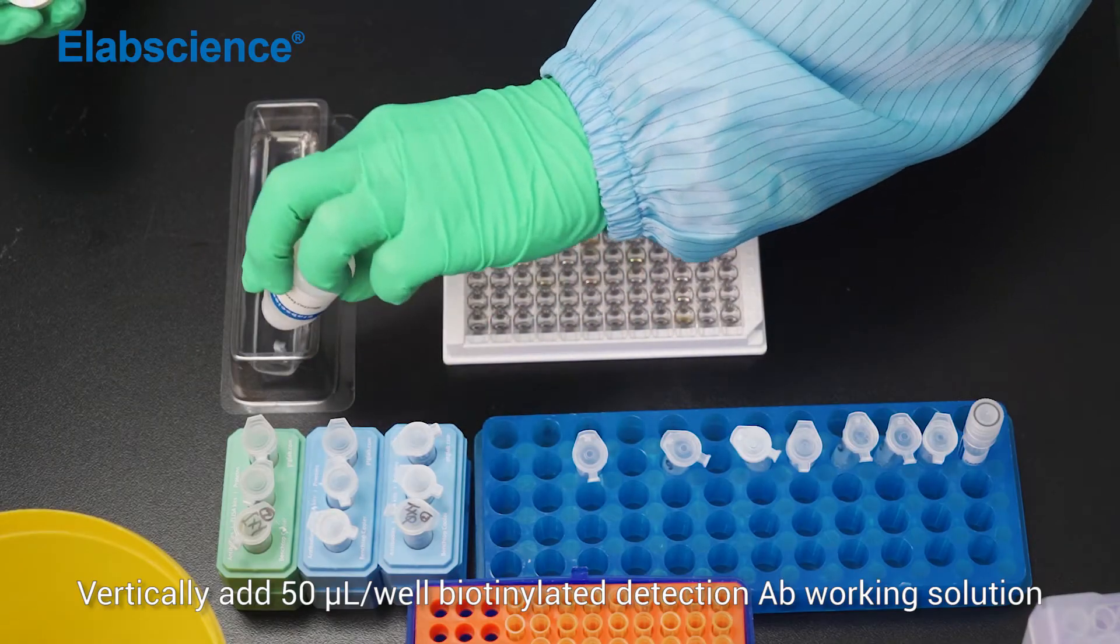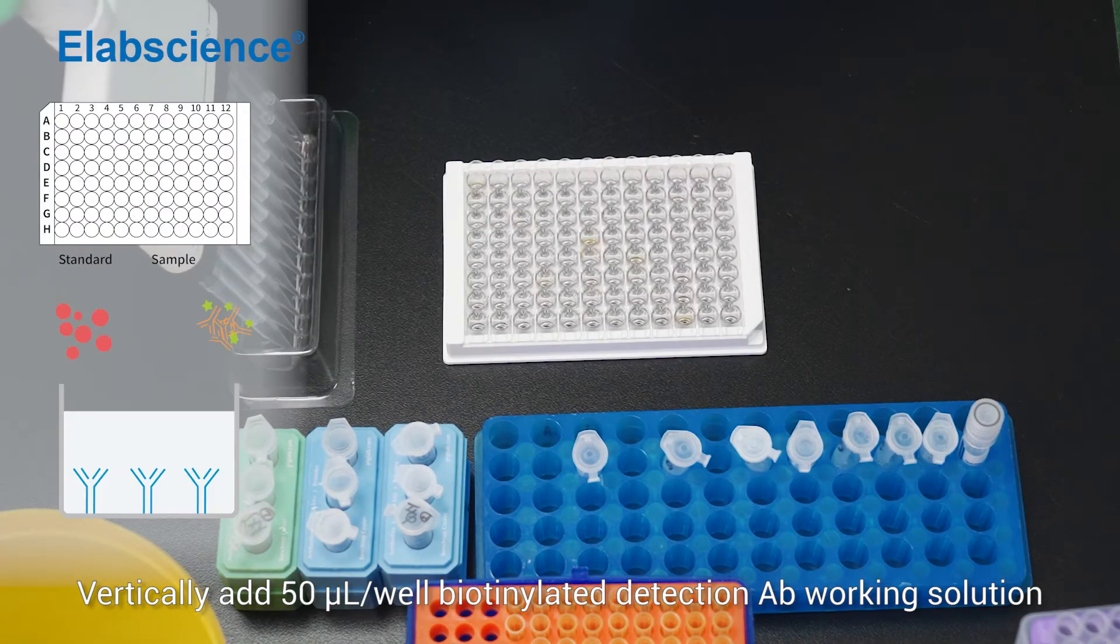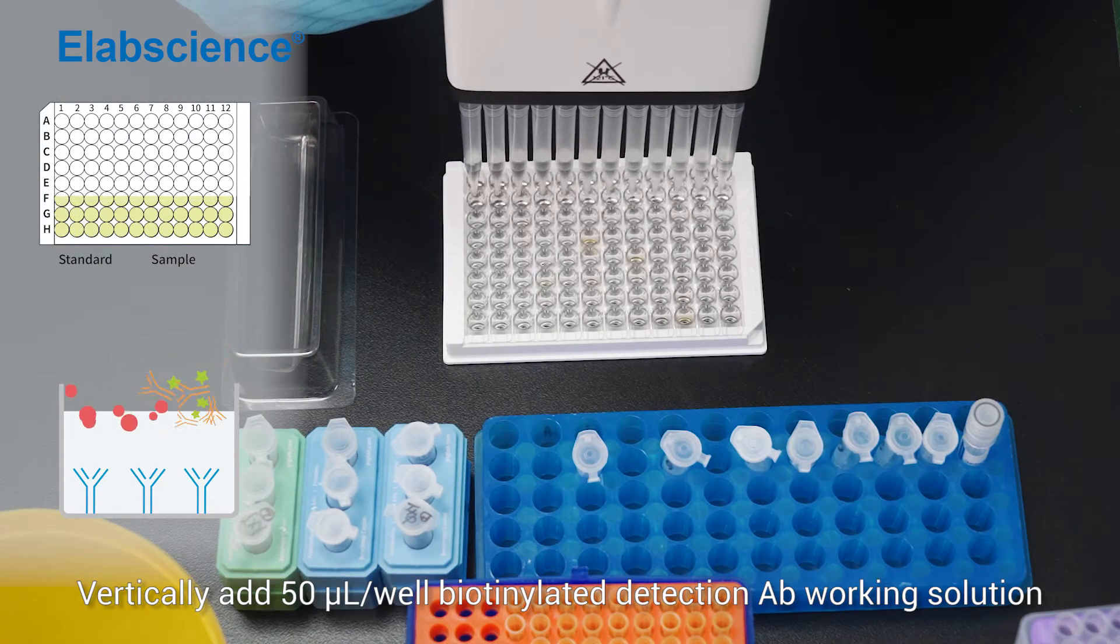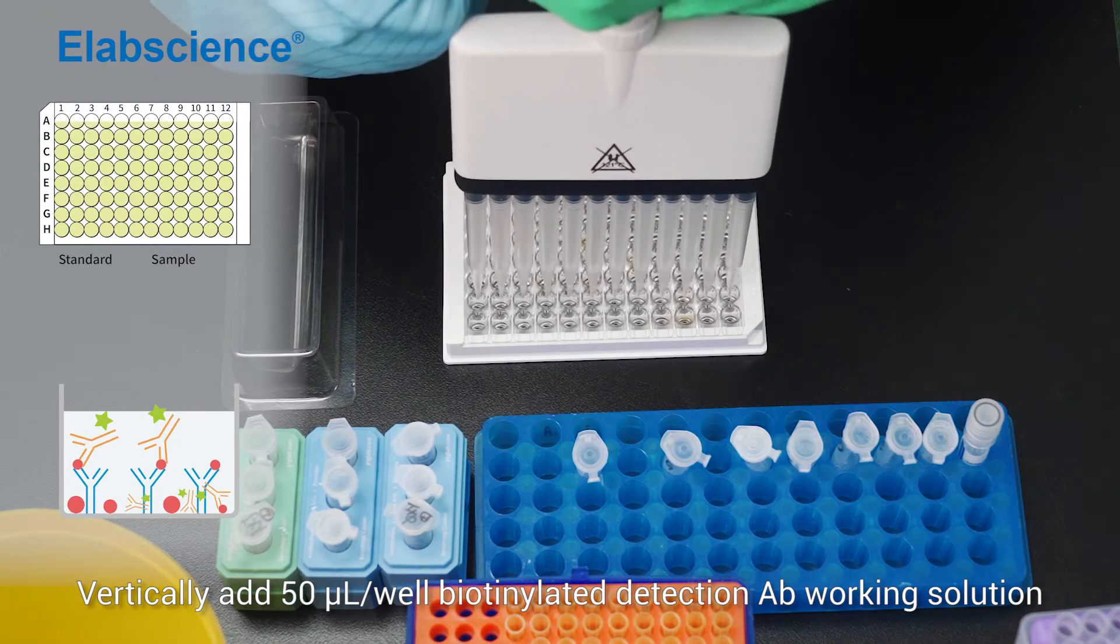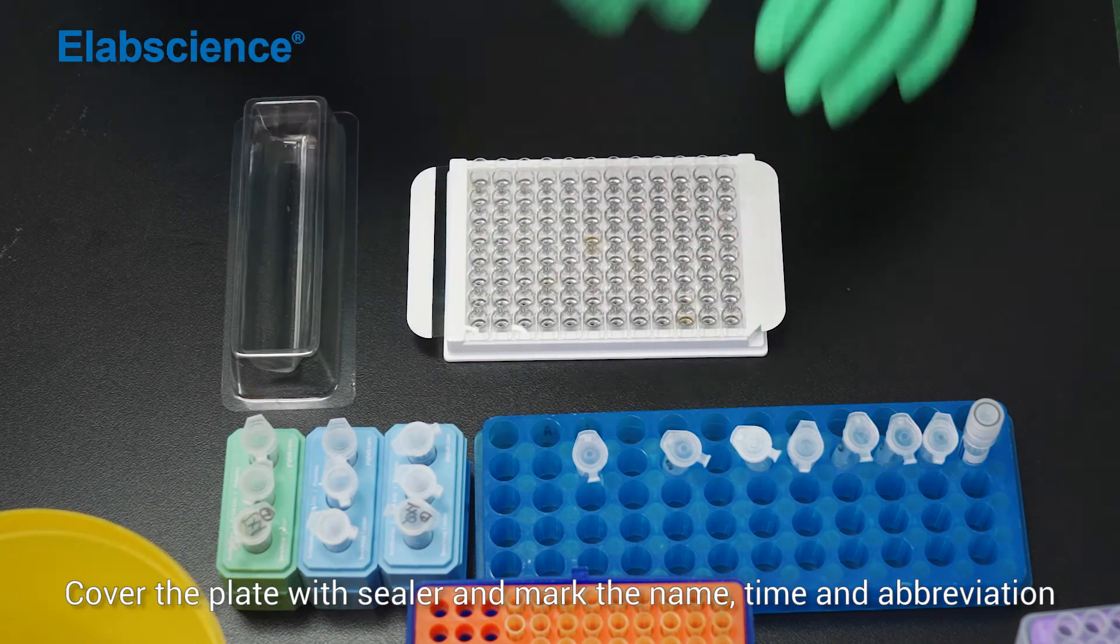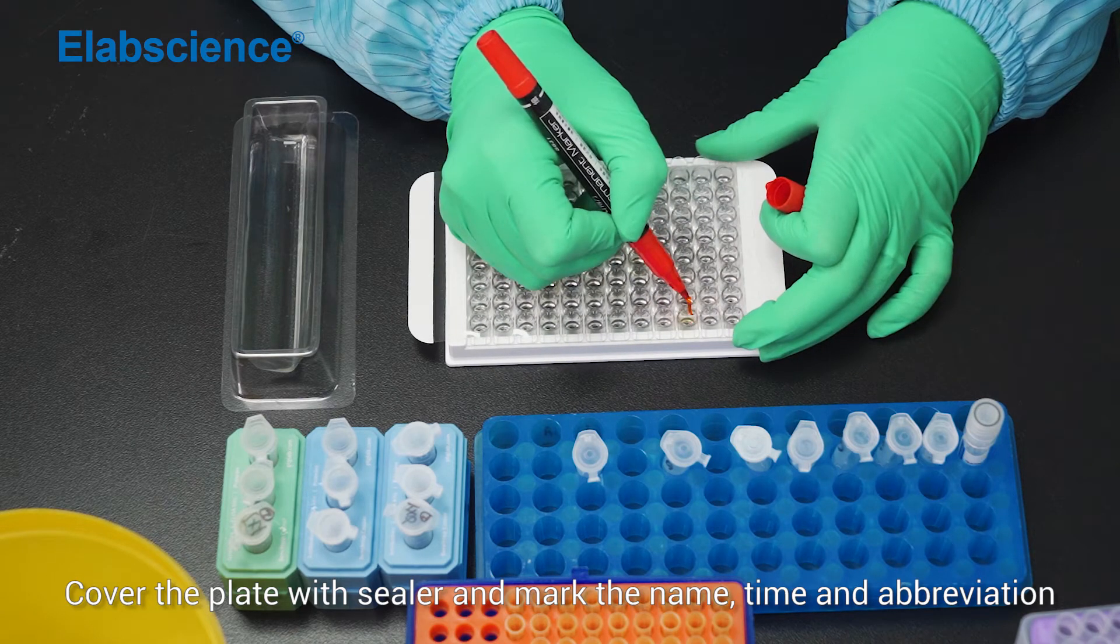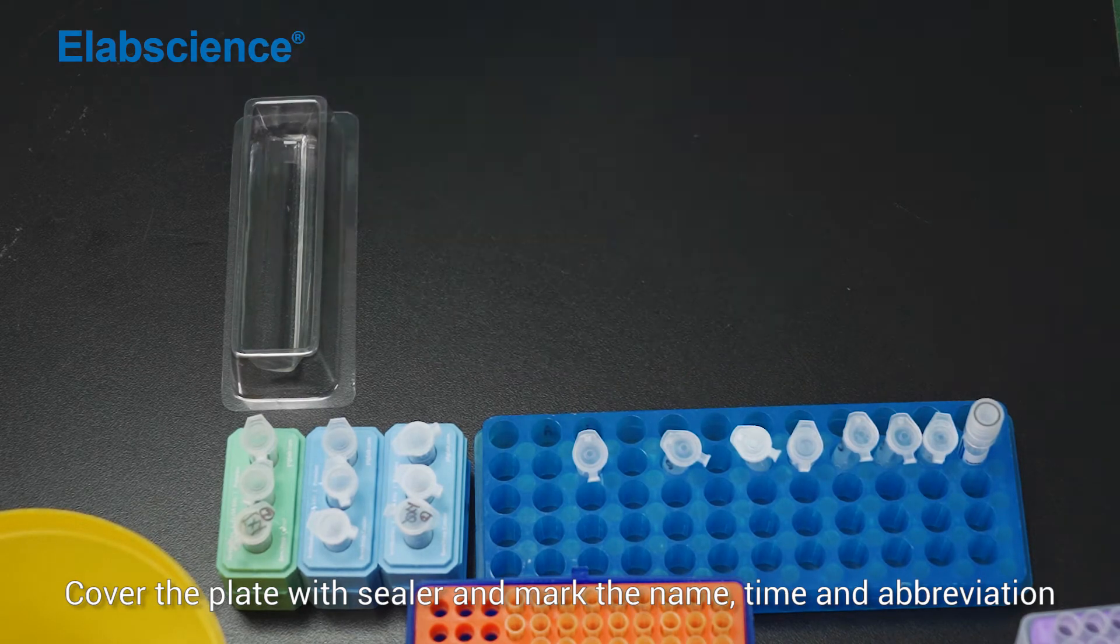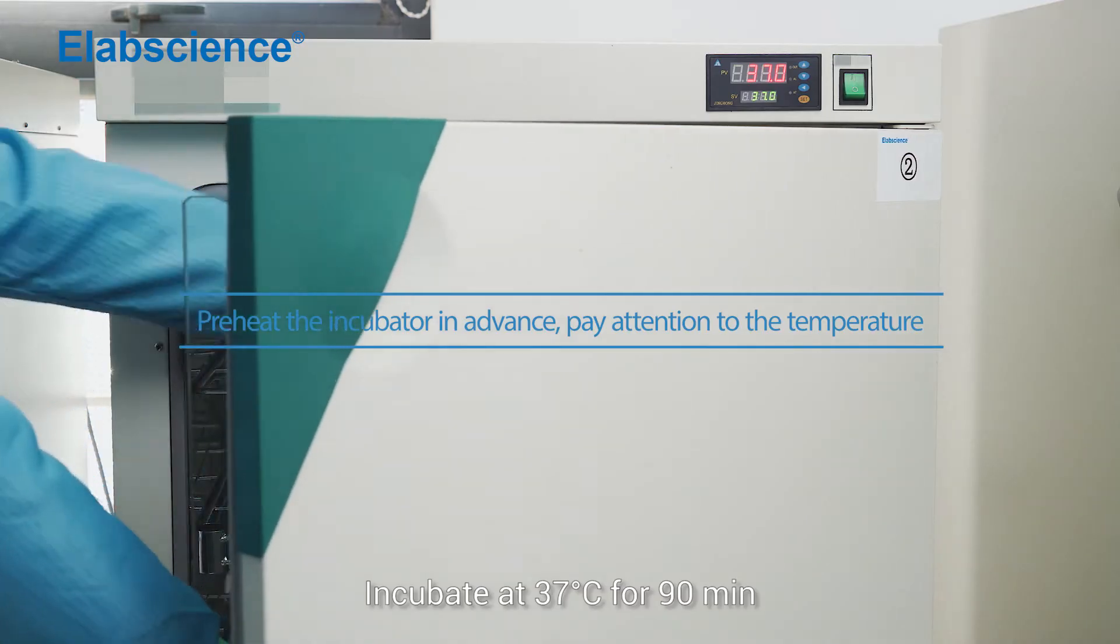Vertically add in 50 µL of biotinylated detection antibody working solution. Avoid touching the inside wall. Cover the plate with sealer and mark the name, time, and abbreviation. Incubate at 37 degrees for 19 minutes.